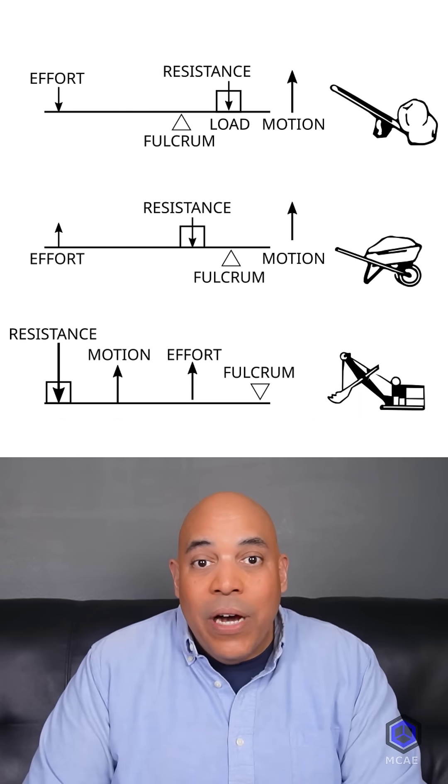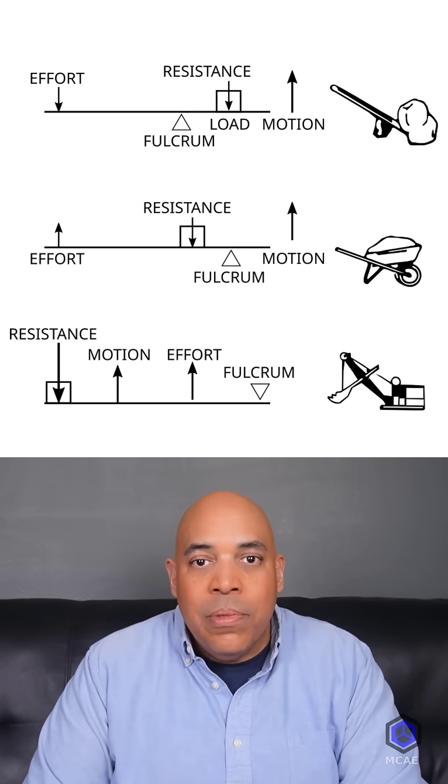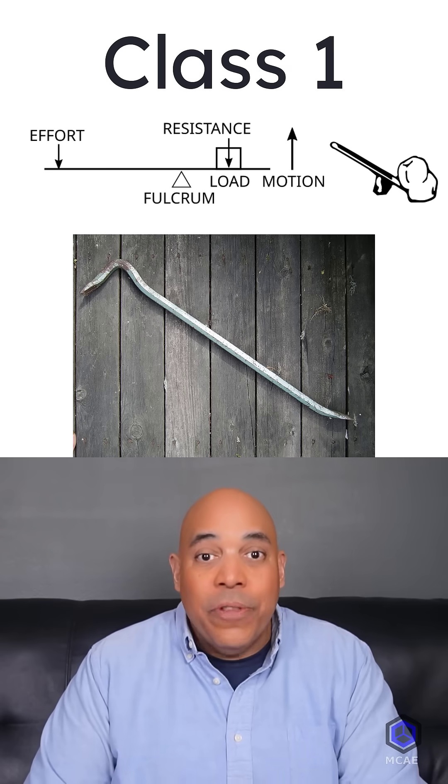Levers are divided into three classes based on which part is in the middle. Class 1 levers have the fulcrum in the middle. A crowbar is an example of this.